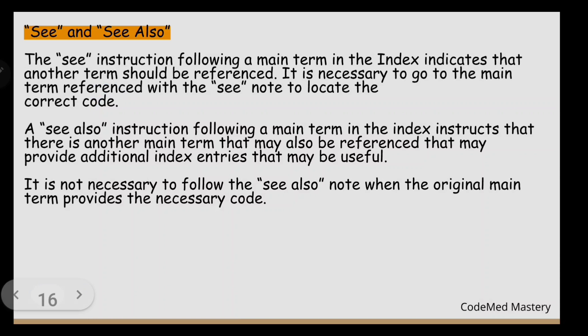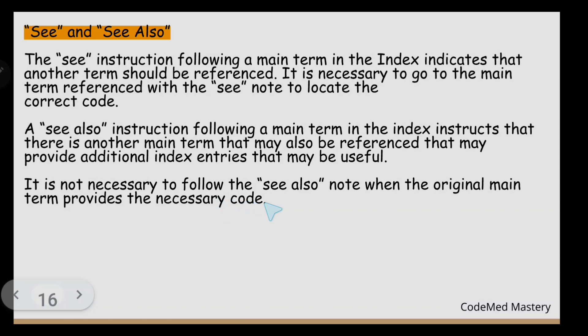Next is 'See.' The See instruction following a main term in the index indicates that another term should be referenced, and it is necessary to go to that referenced term to locate the correct code. 'See Also' indicates that there is another main term that may also be referenced, which may provide additional index entries. It is not necessary to follow the See Also note when the original main term provides the necessary code.